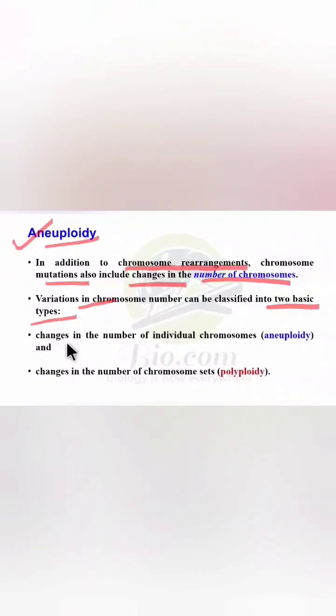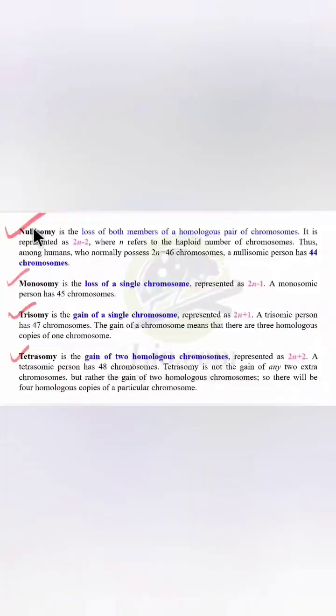If changes occur in the number of individual chromosomes, that is known as aneuploidy. If changes occur in the number of chromosomal sets, then it is known as polyploidy.